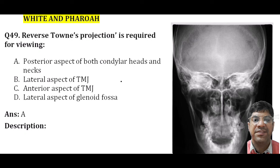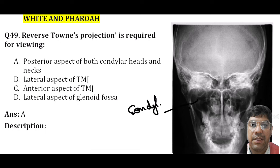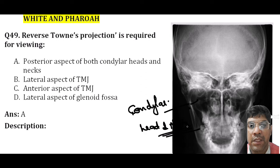The reverse Towne projection is a radiographic technique used in dental and maxillofacial imaging to visualize the posterior aspect of the condylar heads and neck of the TMJ. It is used to identify high fractures of the condylar head and neck, condylar hypo- or hyperplasia, or intracapsular fractures of the TMJ. The answer is A.